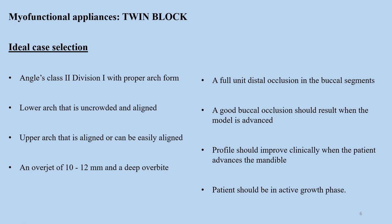How do you choose a patient to receive a twin block? For ideal case selection, if you come across Angle's Class 2 Division 1 with a proper arch form, you can choose this appliance. If the lower arch is uncrowded and aligned, or the upper arch is aligned or can be easily aligned with minimal movement or displacement of teeth, you can consider using the twin block. A full unit distal occlusion in the buccal segments with a good buccal occlusion is also appropriate.